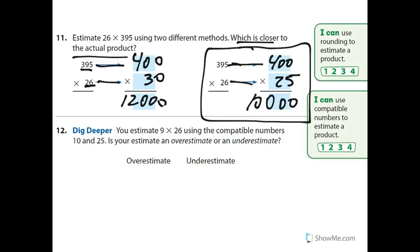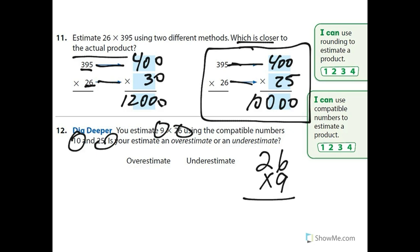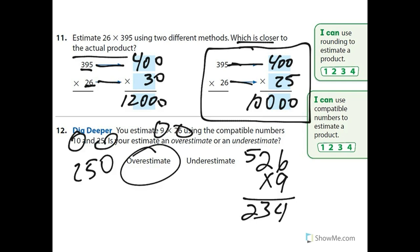Let me show number 12 as well because it can be a little confusing. It says you estimate 9 times 26 using compatible numbers 10 and 25. Is your estimate an overestimate or underestimate? That can be confusing because 10 is larger than 9, but 25 is smaller than 26. You would have to do the actual computation: 9 times 26 is 234, and the estimate is 250. So it is an overestimate — you would actually have to do the computation to really know.